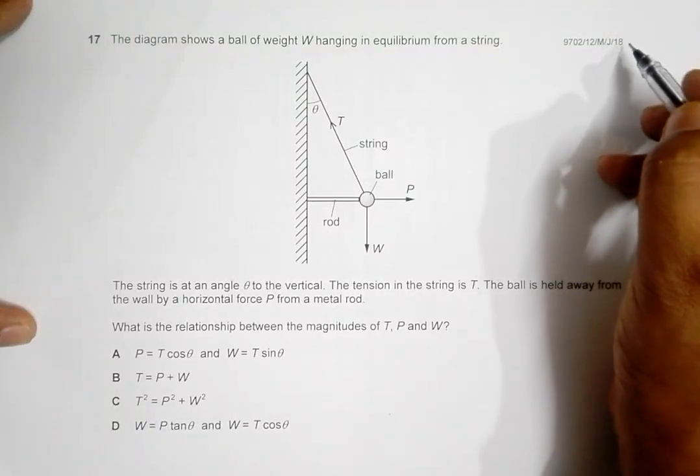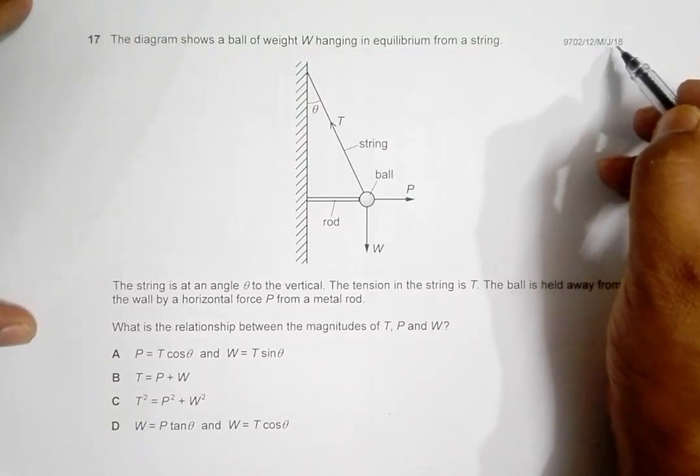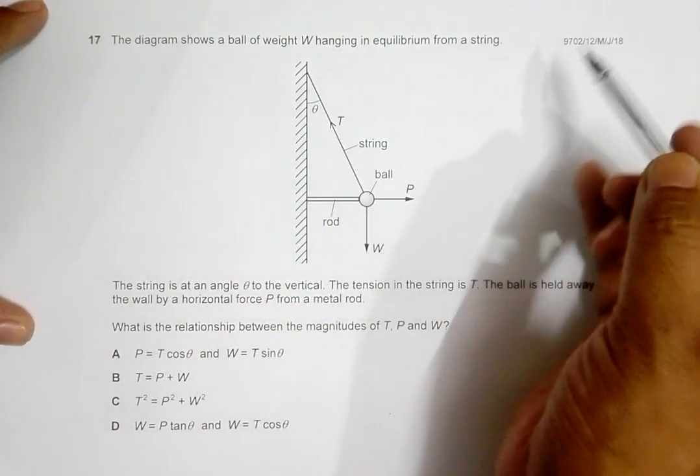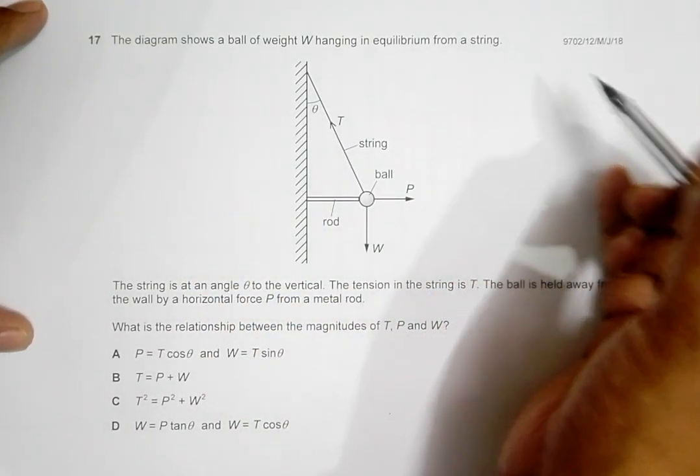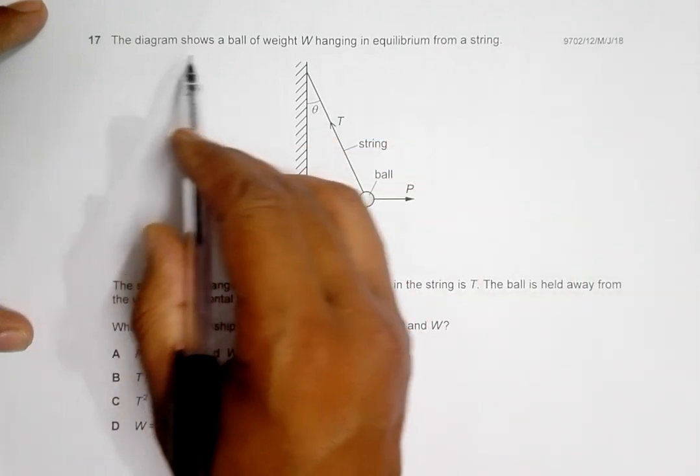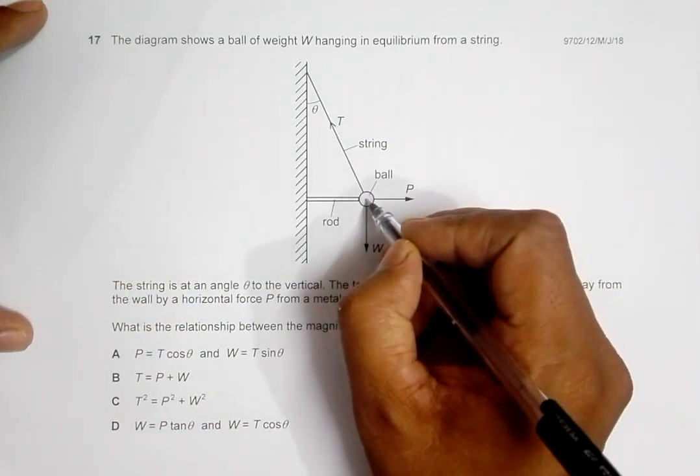Hello folks, this is a 2018 Mason paper 1-2, question number 17. It's concerned with equilibrium. We can apply vectors here. It says the diagram shows a ball of weight W.